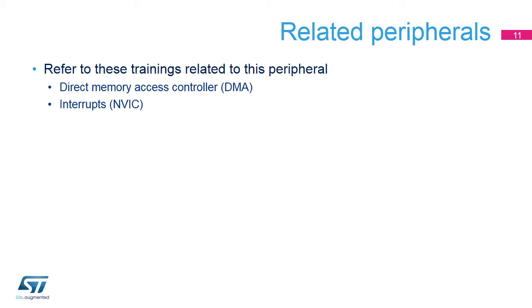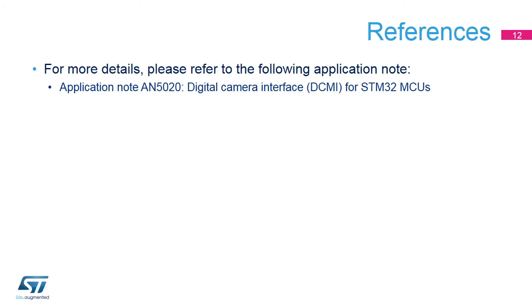The camera additionally needs to be set up through the I2C bus before the images can be transferred via DCMI. An example of two camera setups is available in the board support package driver files. Other camera types need different setup that users have to extract from their documentation. For more details, please refer to the application note AN5020 about DCMI on STM32 devices.